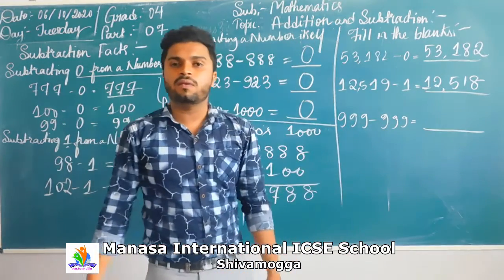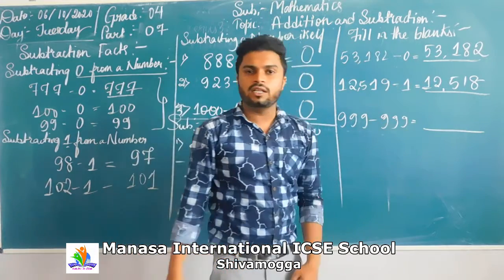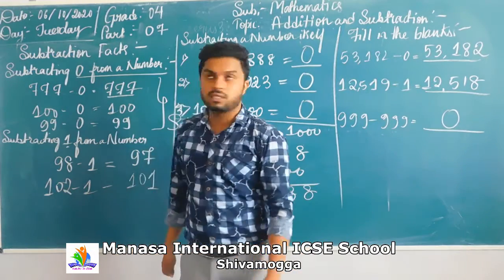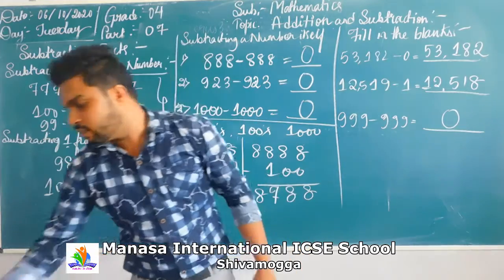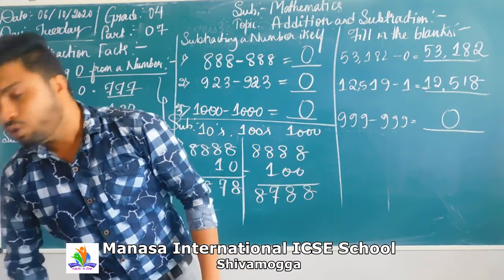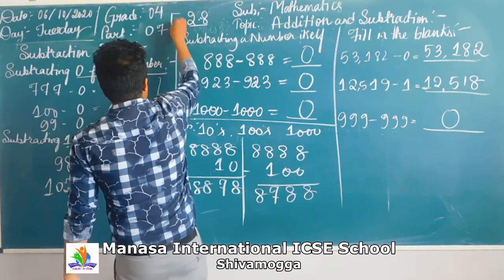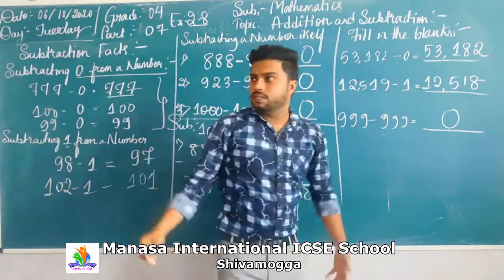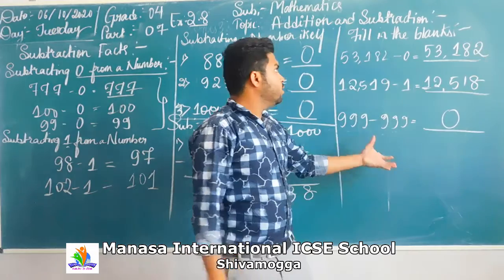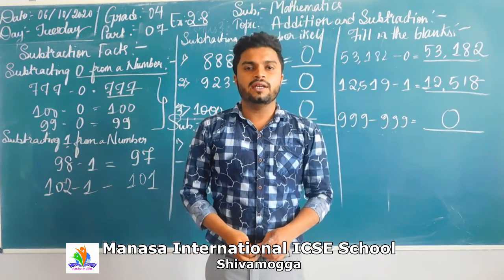Using the third property: 999 minus 999 gives you zero. This problem is from Exercise 2.8. I have solved these fill-in-the-blank problems using the subtraction properties. We will continue with the next topic in the next video. Till then, take care.